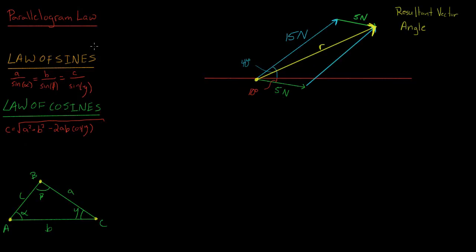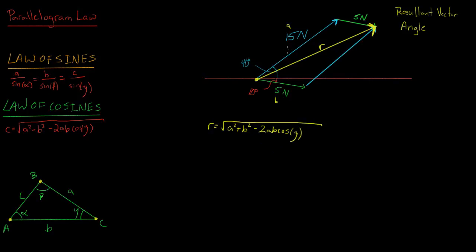We don't know the length of the resultant — right now it's just r. We're going to use the law of cosines to figure out what the length of r is. Let's call one side a and the other b. We know that r equals the square root of a squared plus b squared minus 2ab times the cosine of gamma. In our triangle, gamma is this angle right here, because it is across from our side r — just like in the law of cosines triangle where gamma is across from length c.